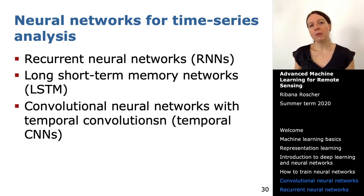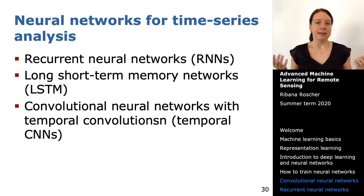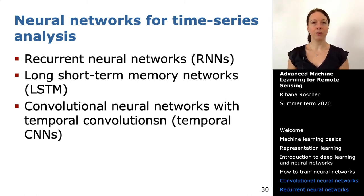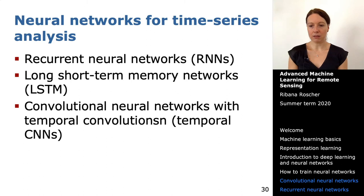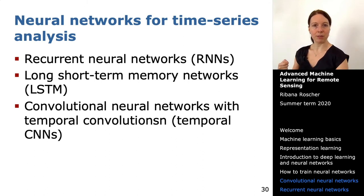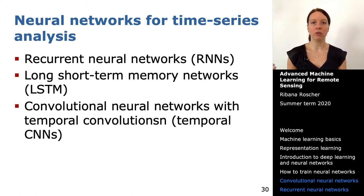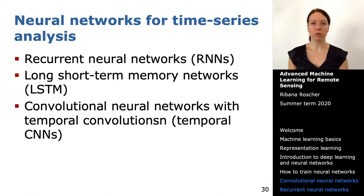For neural networks applied to time series, there are different options: recurrent neural networks (RNNs) are the standard basic algorithm for time series; long short-term memory (LSTM) networks are more sophisticated. You can also use CNNs by treating temporal patterns as spatial ones — resulting in temporal CNNs. And of course you can combine convolutions with recurrent neural networks.